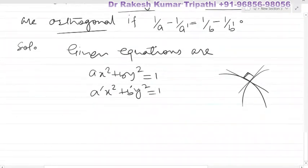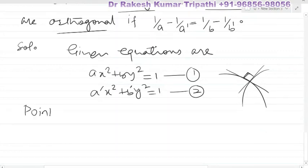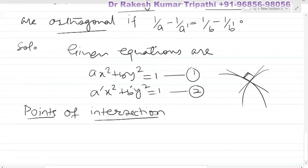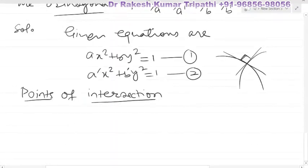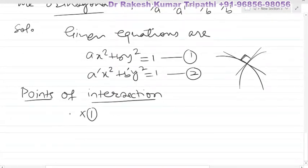First of all, we need to find the point of intersection. To find points of intersection, we shall use the elimination method to find values of x and y. We shall multiply the first equation by a' and the second by a, and then subtract equation 1 from equation 2.